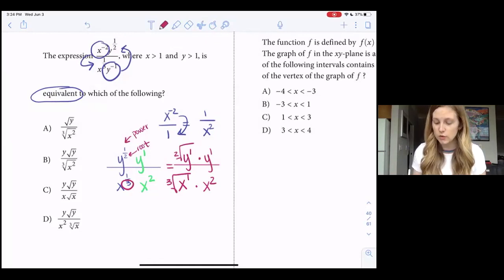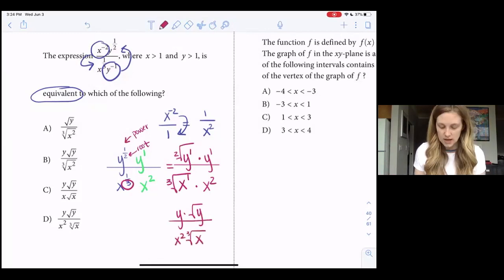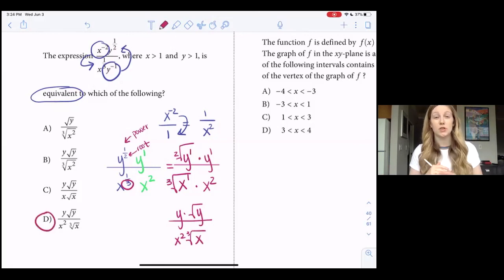So I'm looking for y times the square root of y all over x squared times the cube root of x, and lo and behold, that is choice D. So I don't need to do any further combining or simplifying, I can just stop here.